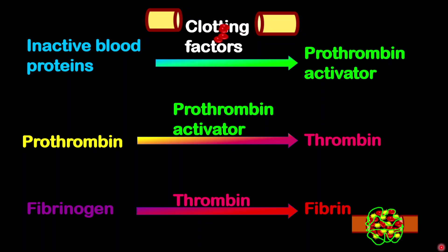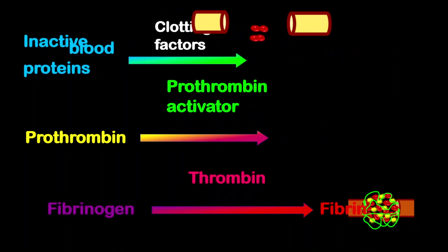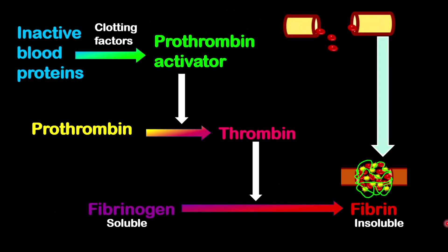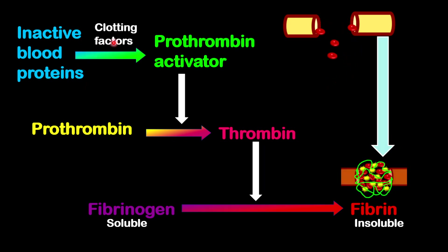Let's put this all together. What you want to move from is the bleeding process to where a clot is formed and bleeding is prevented, which means stopping the loss of blood from your body. Step by step: the first thing is that the clotting factors will convert the inactive blood proteins into prothrombin activator.